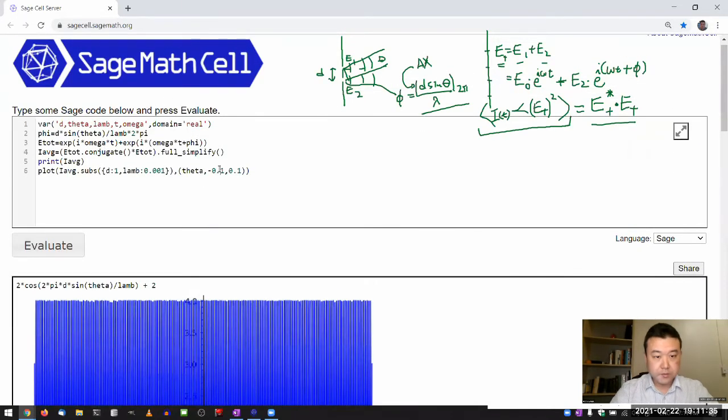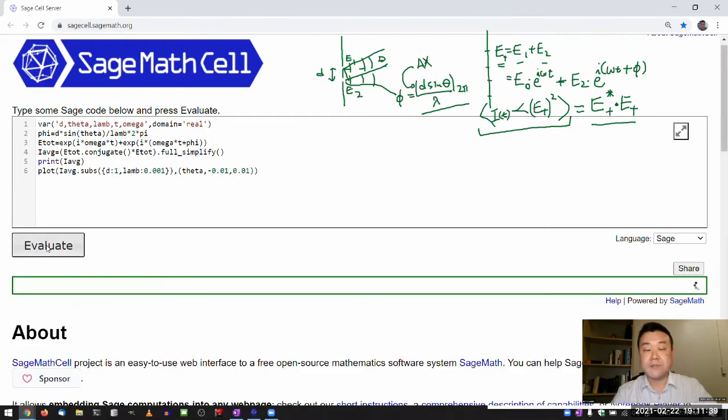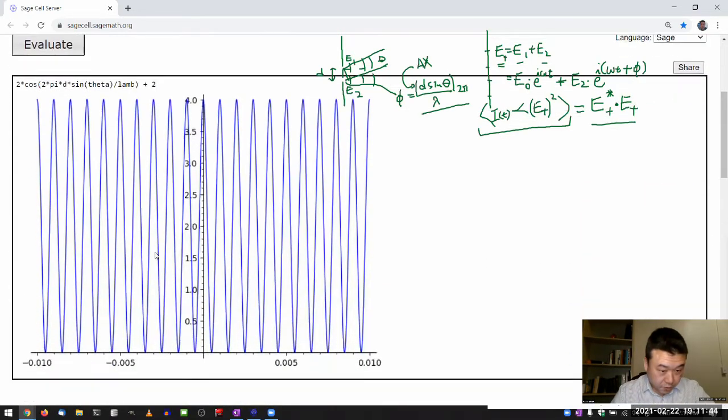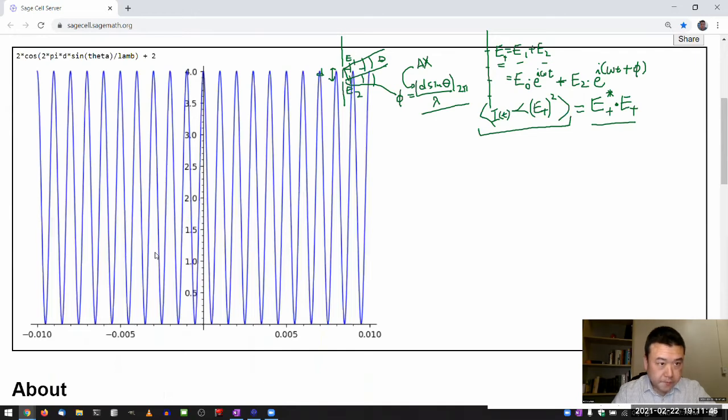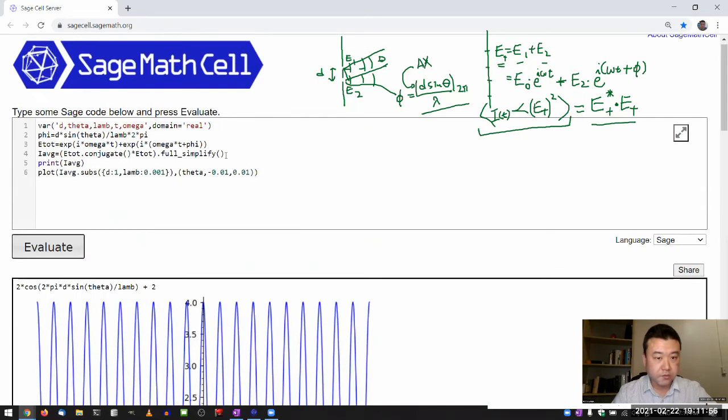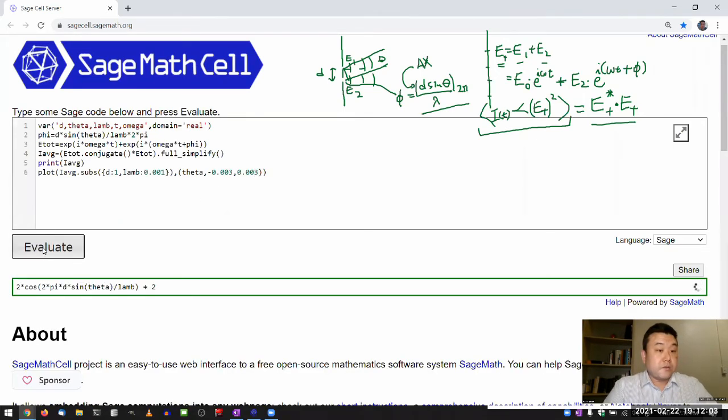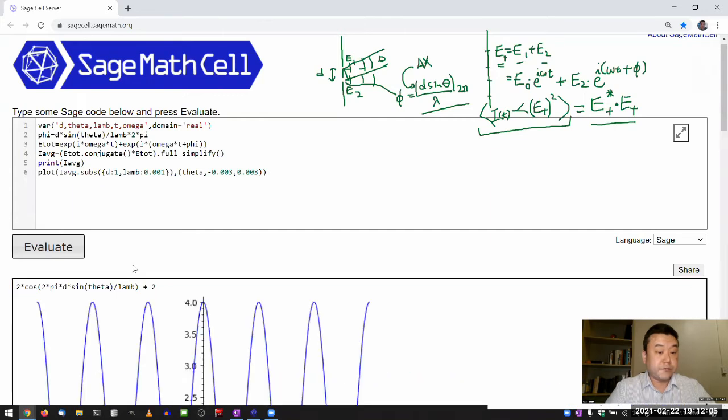All right, I need to go smaller. 0.01. So from minus 10 milliradians to 10 milliradians, small angle. All right, that's looking reasonable. Do I want to leave it there? I think I want a smaller portion. So let me go from minus 0.003 to 0.003.